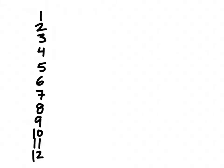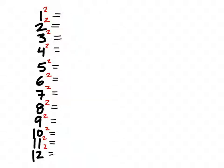So before we continue, let's look at 1 through 12 real quick. The reason we're going to look at these numbers is because I want to look at their squares. A square just means it's some kind of power of 2. So 1 squared is 1, 2 squared is 4, 3 squared is 9, 4 squared is 16, and I'll just list the rest of these for you — you can plug them into a calculator if you'd like.